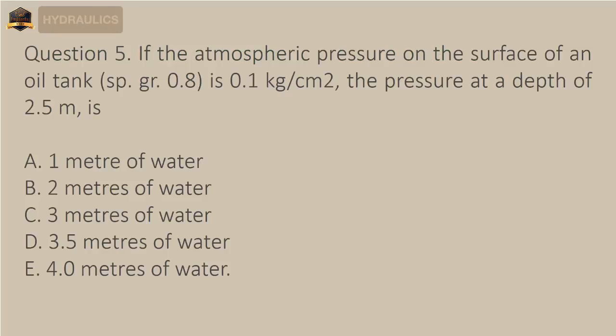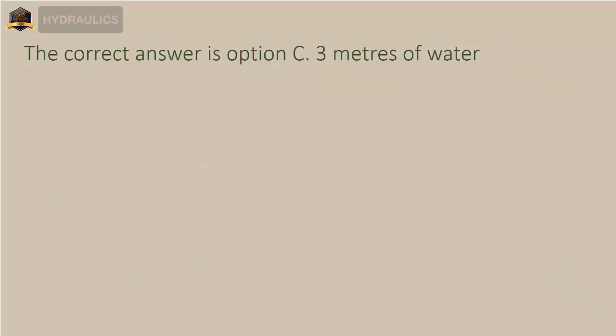Question 5: If the atmospheric pressure on the surface of an oil tank (specific gravity 0.8) is 0.1 kg/cm², the pressure at a depth of 2.5 meters is — A) 1 meter of water, B) 2 meters of water, C) 3 meters of water, D) 3.5 meters of water, E) 4.0 meters of water. The correct answer is option C: 3 meters of water.